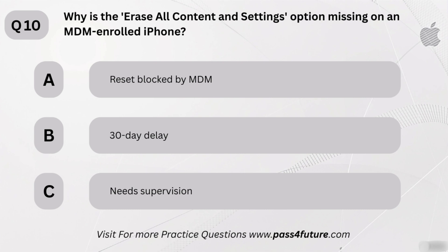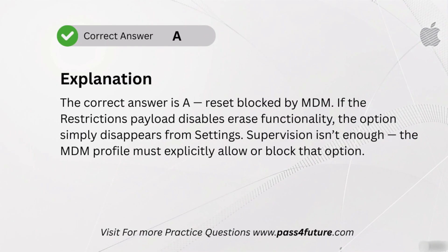Why is the 'Erase All Content and Settings' option missing on an MDM-enrolled iPhone? A. Reset blocked by MDM. B. 30-day delay. C. Needs supervision. The correct answer is A — reset blocked by MDM. If the restrictions payload disables erase functionality, the option simply disappears from settings. Supervision isn't enough — the MDM profile must explicitly allow or block that option.